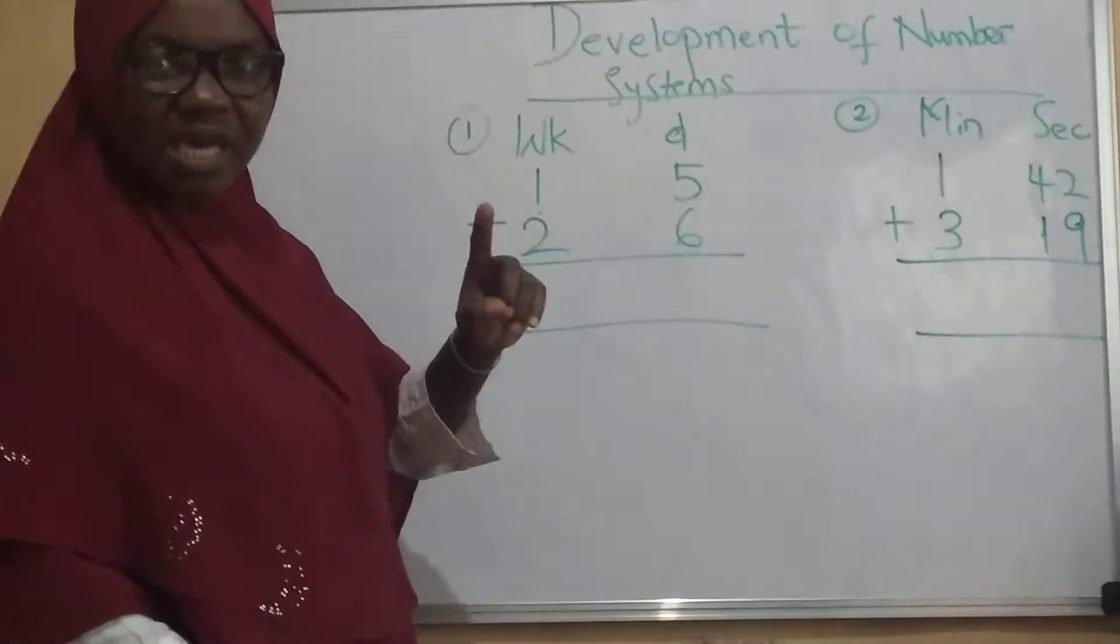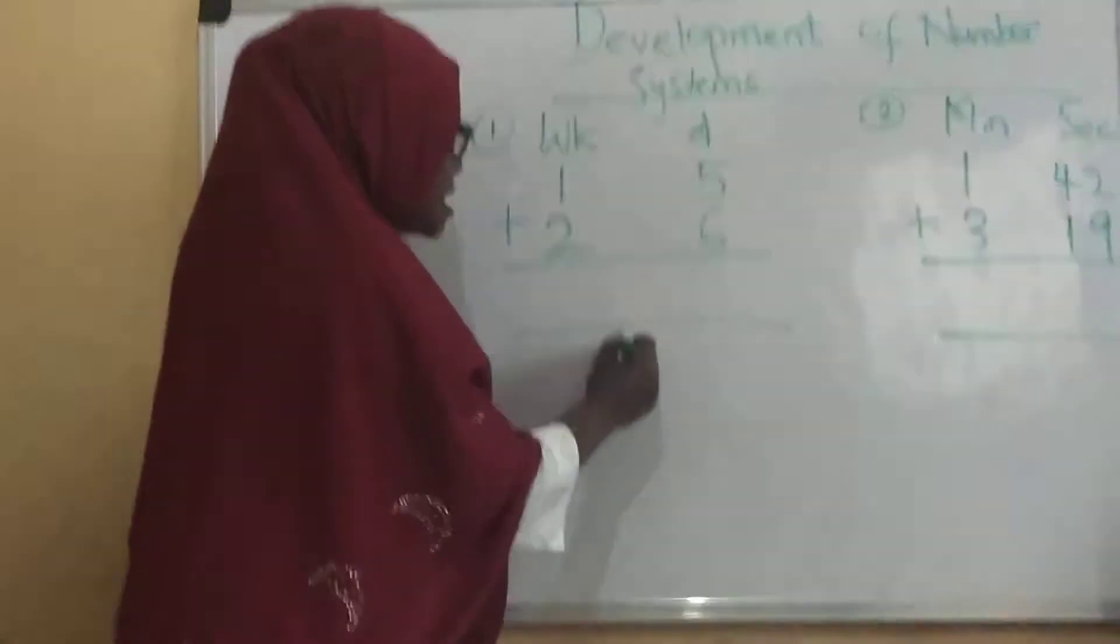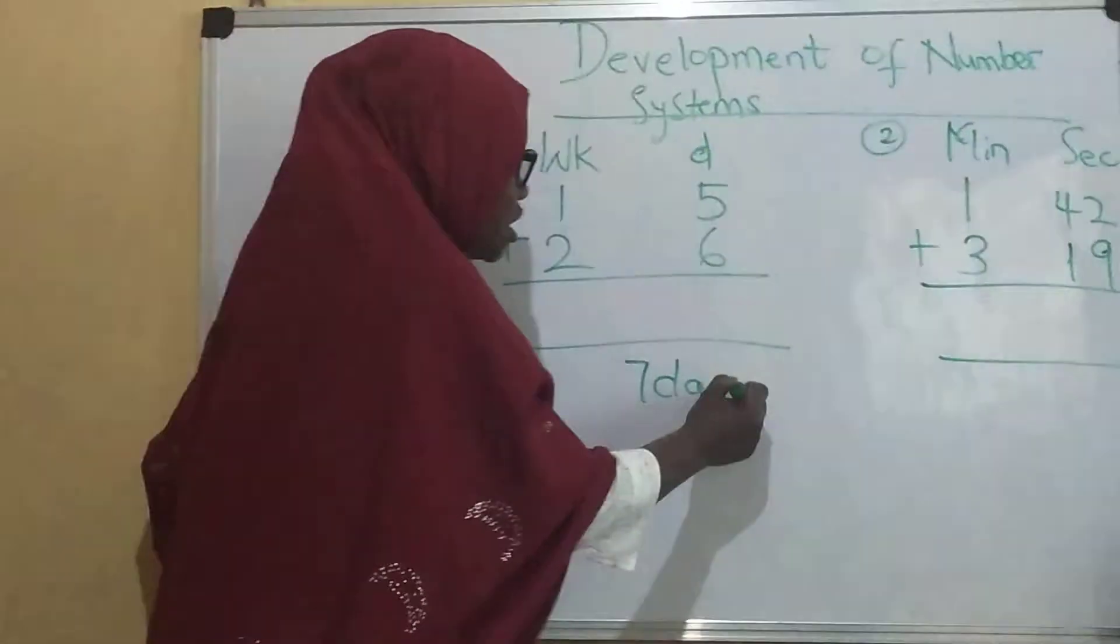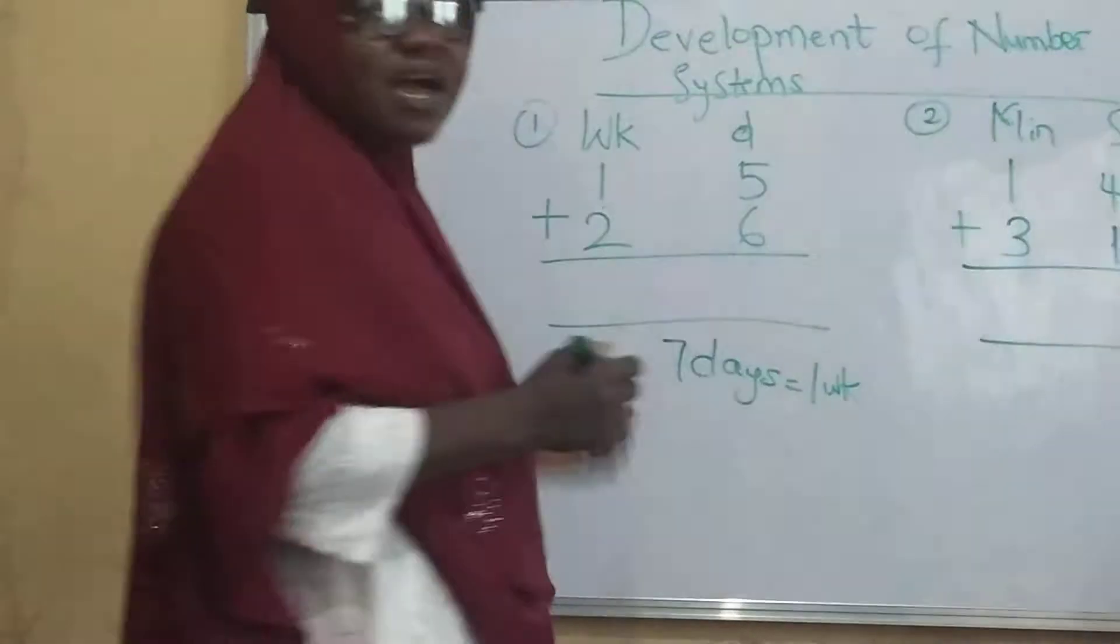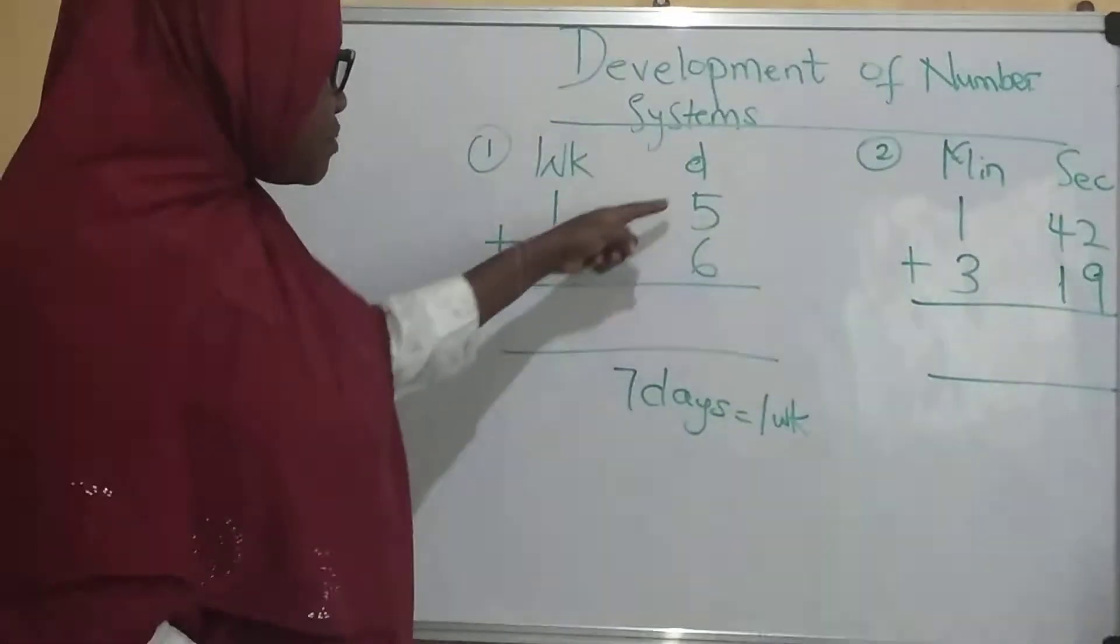Now before we start adding, don't forget that we have seven days make one week. Seven days equals to one week. Now if I have seven days equals to one week, what does that tell me? That means that if I'm going to add this together, five plus six...